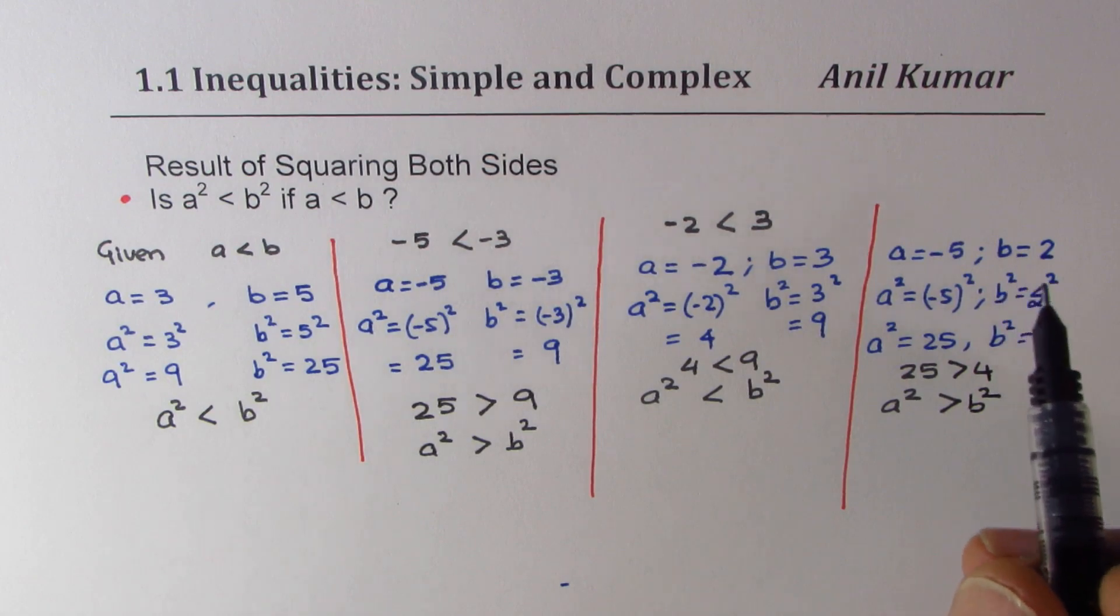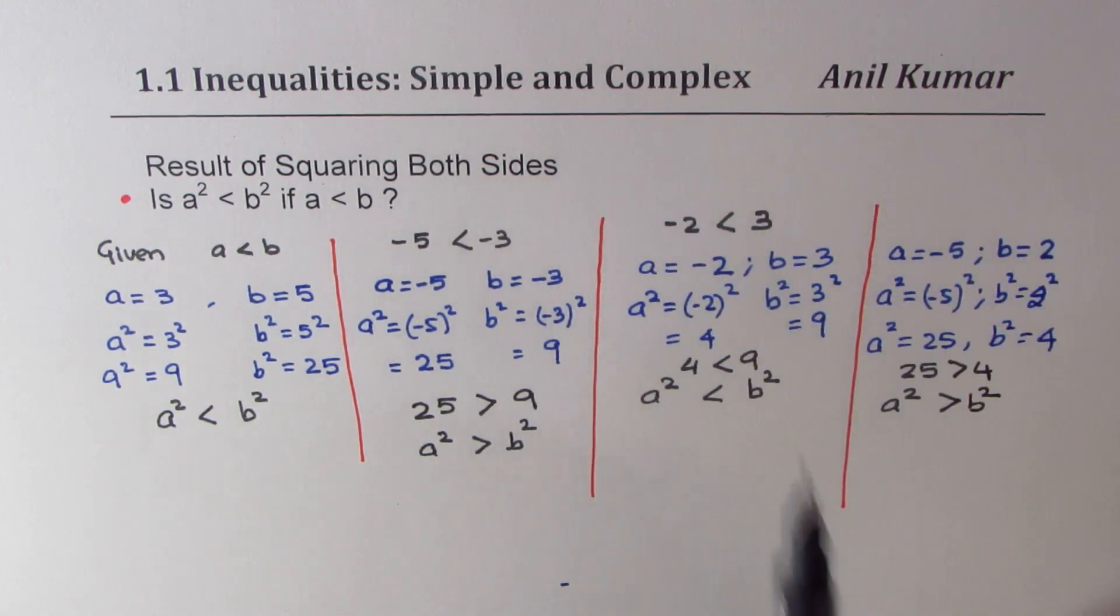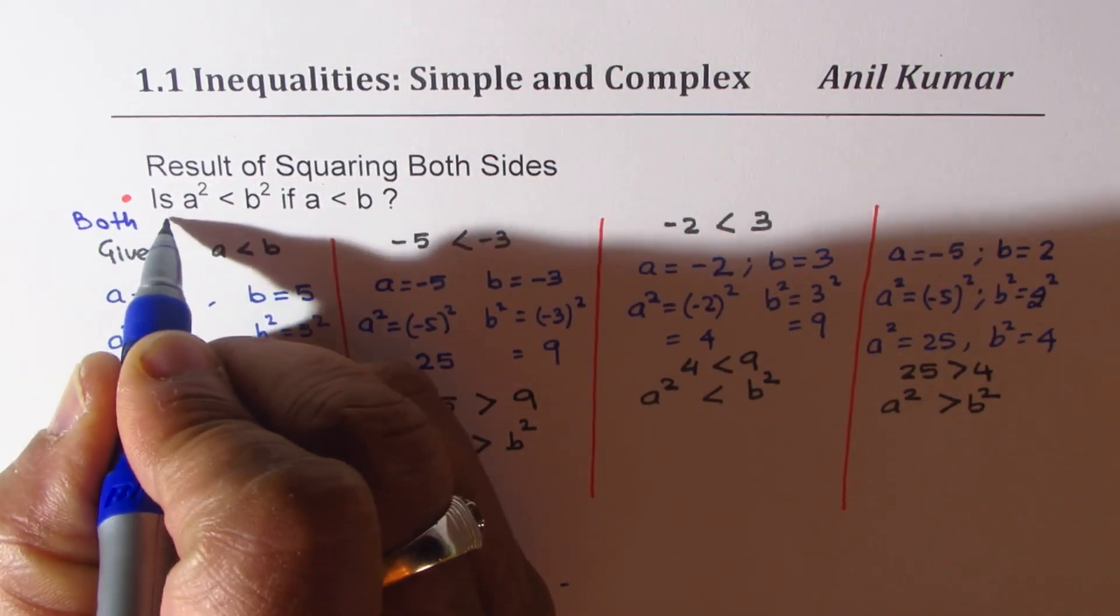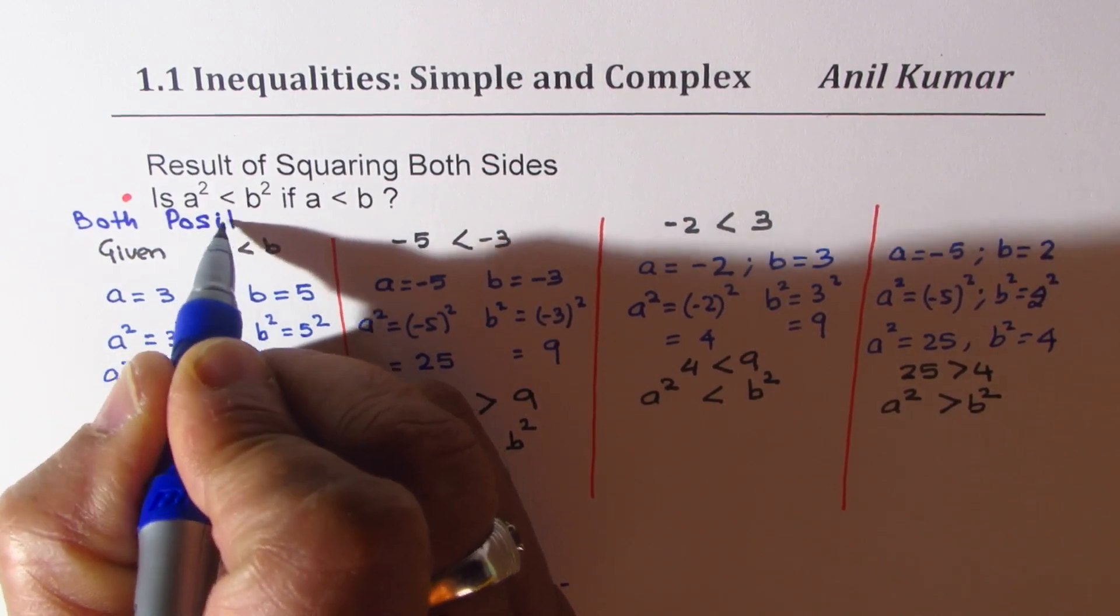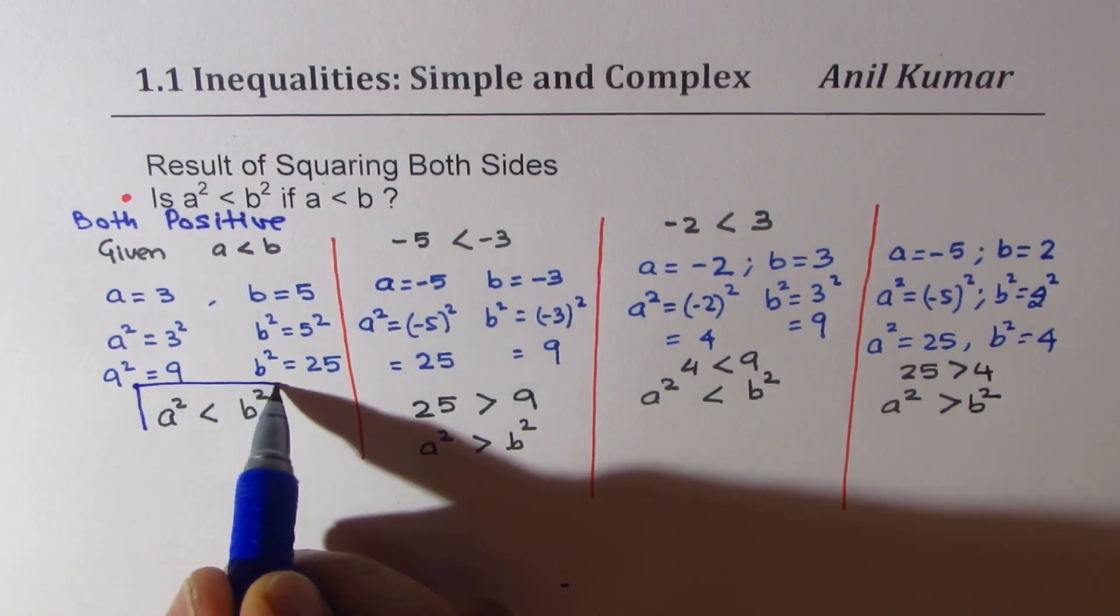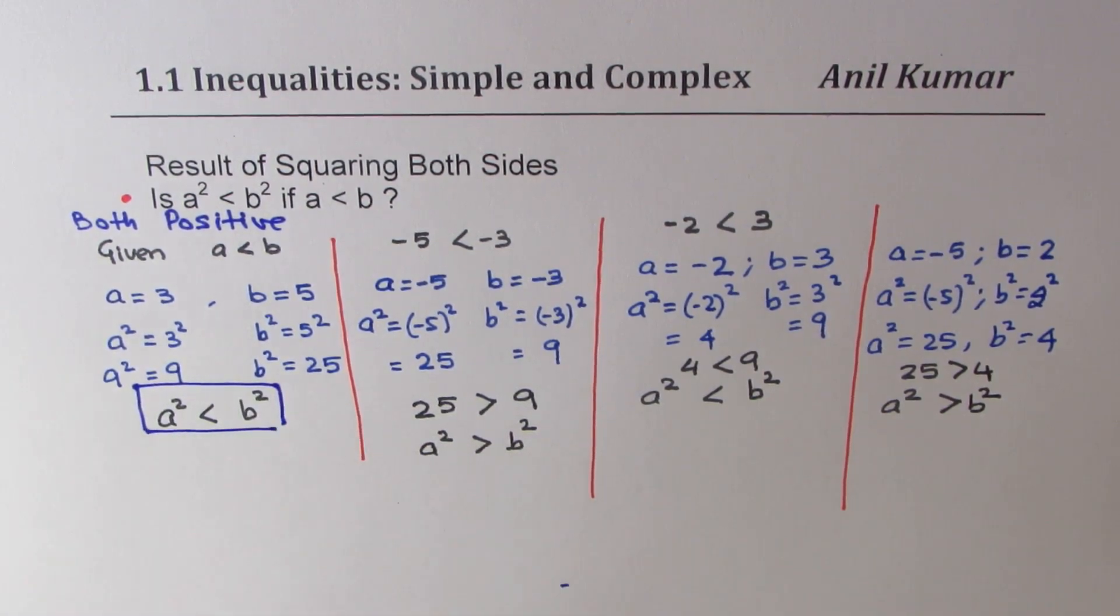So, if I have one negative, let me rewrite this as conditions, what we are trying to do here. What we did was that we took both positive here. In that case, we get that a² < b². Perfect.